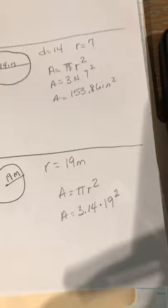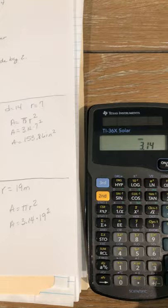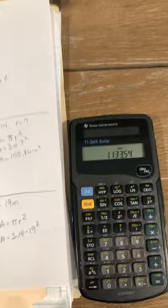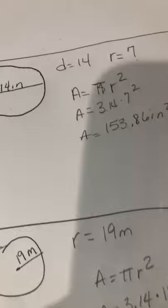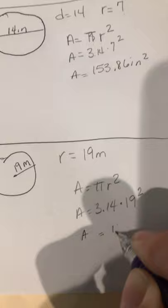So here's our calculator. 3.14 times 19 squared equals, oh, that's a big number. But you know what? It's right. So A, whoops, hang on one second. A equals 1,133 and 54 meters squared.